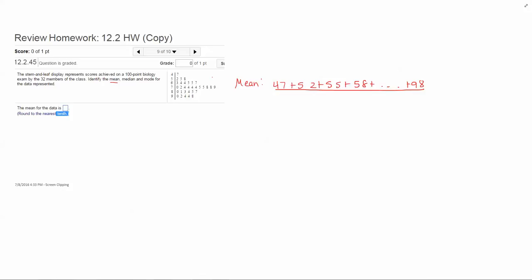To find out how many numbers there are, if they don't tell you, you would count up all the leaves. All of these numbers here are individual values in the data set. In the question they tell you there are 32 members in the class and they're all represented here.